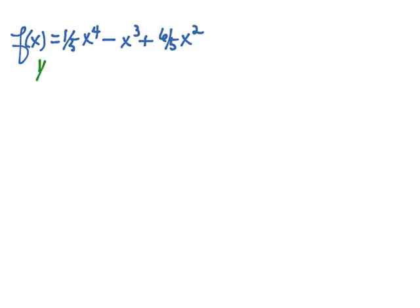So let's find the zeros by setting our equation equal to zero. The first thing that we always look for is there anything, a factor that each term has in common, and I think that what they all have in common on this particular function is one-fifth x squared.